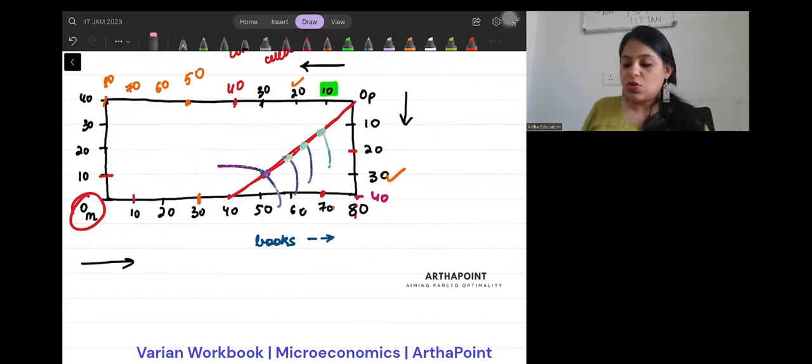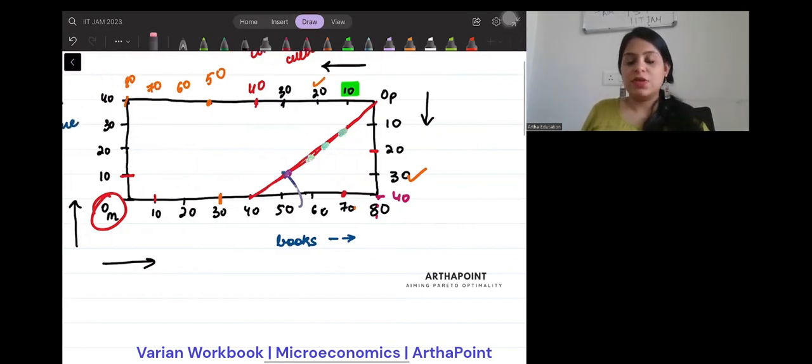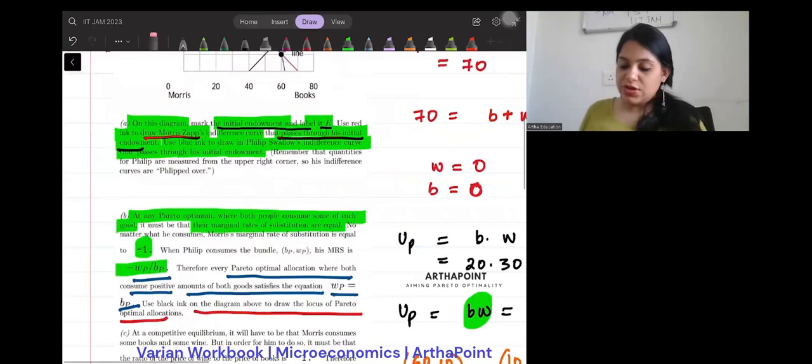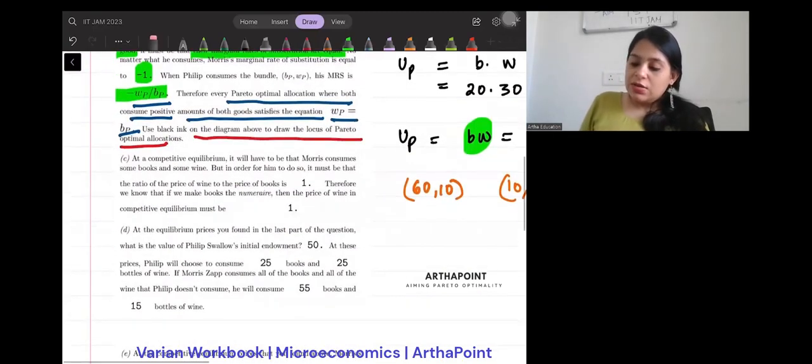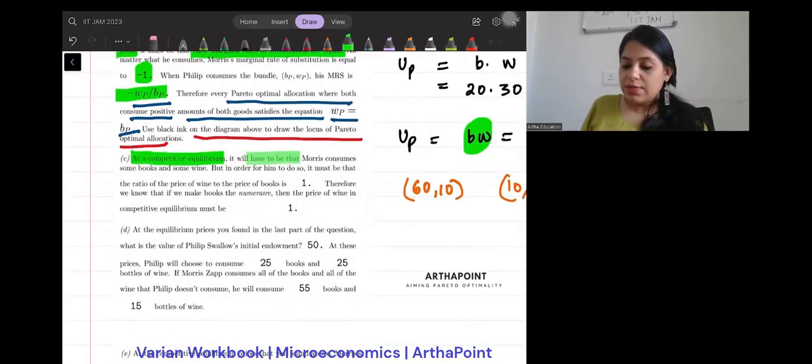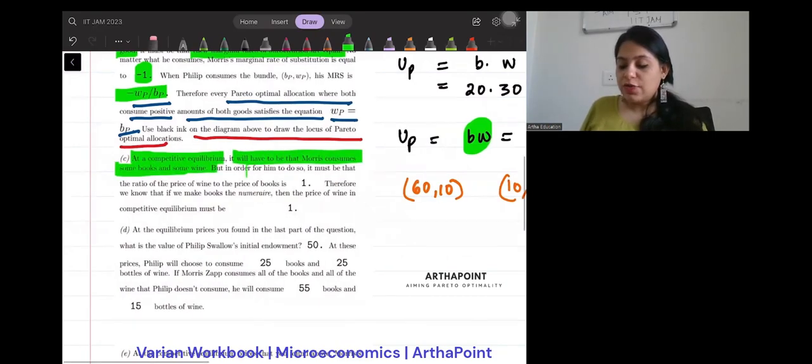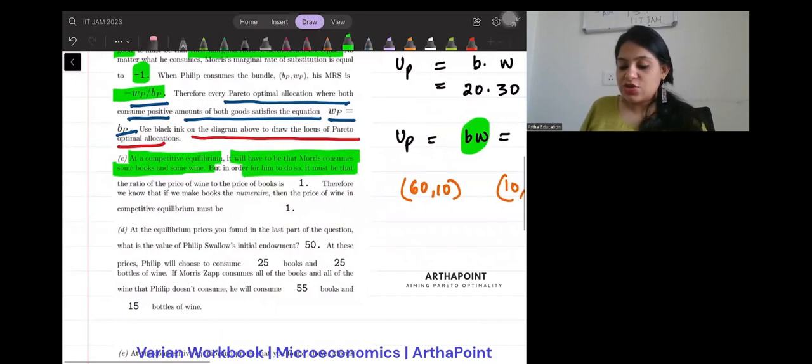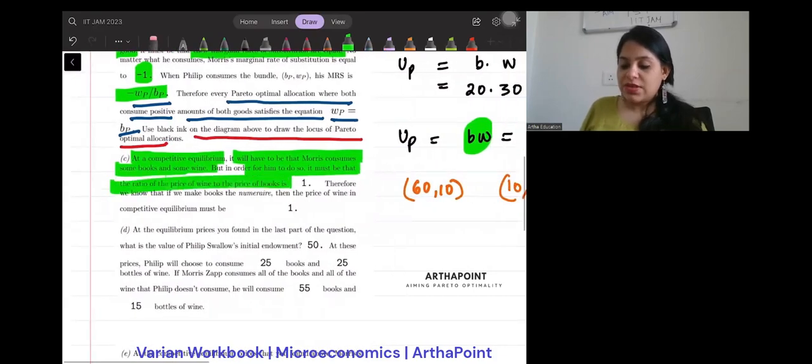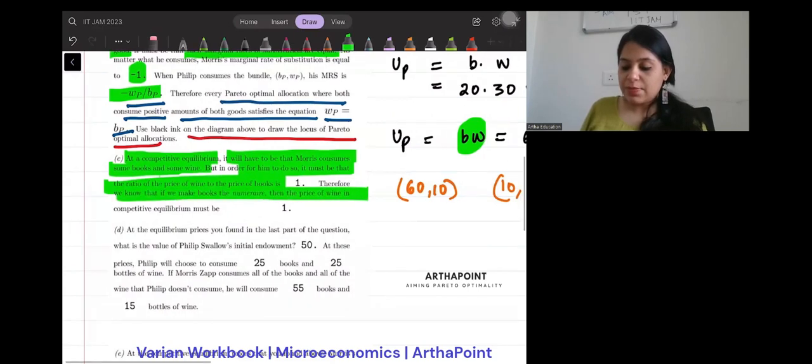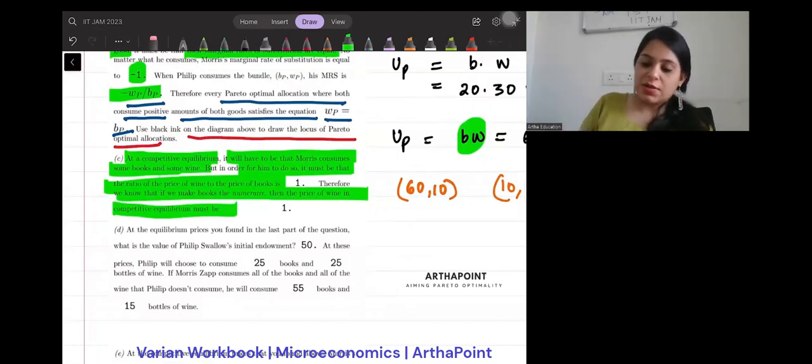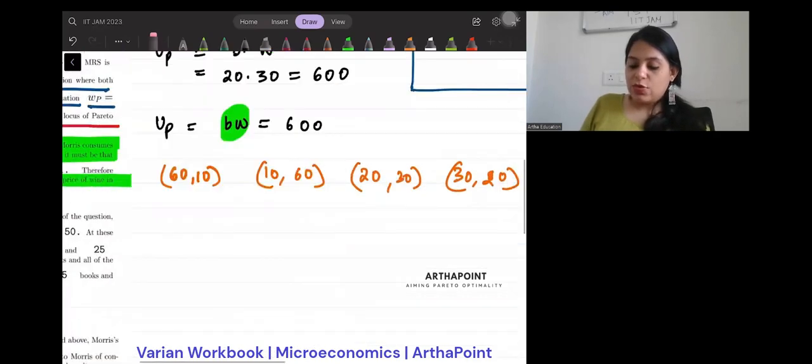Okay, so we have now been able to draw a contract curve. Now come to the next one. At a competitive equilibrium, it will have to be that Morris consumes some books and some wine, but in order for him to do so, it must be the case that ratio of prices of wine is. Therefore we know that books, we make books the numerator, then the price of wine and competitive equilibrium must be. This is excellent question. Let's think about it. I want to spend some more time on this question, so just think about this.